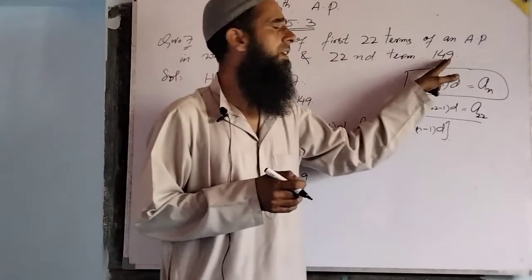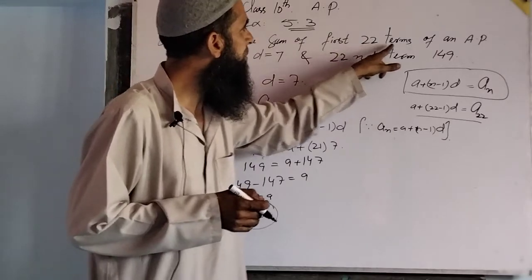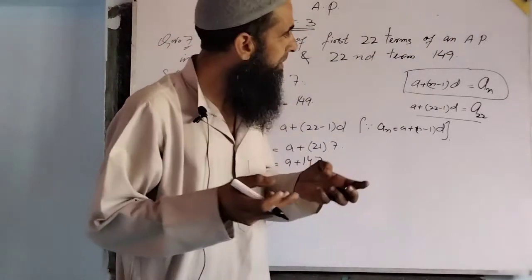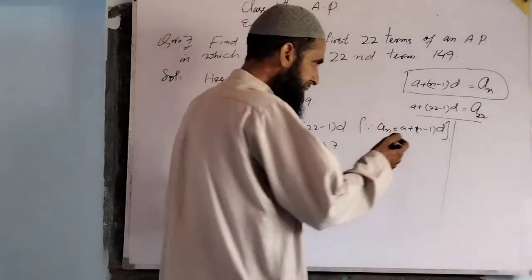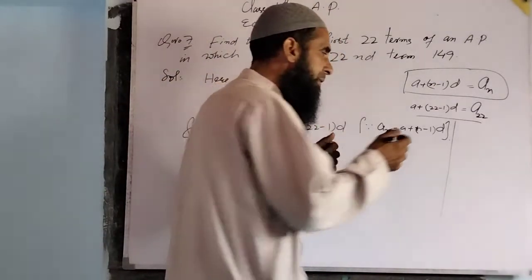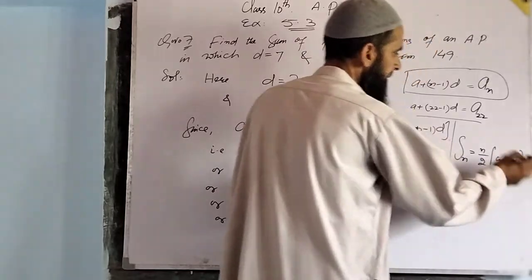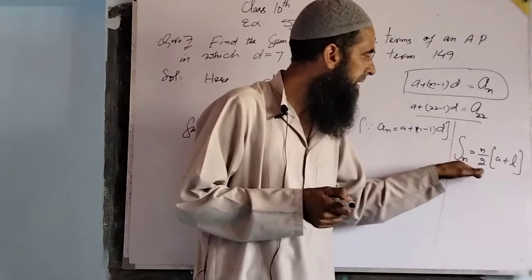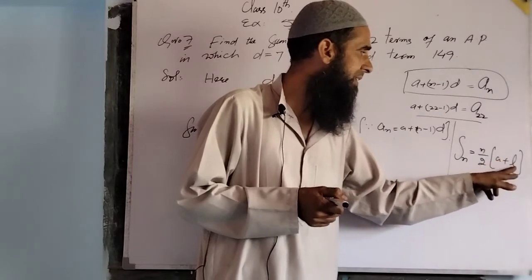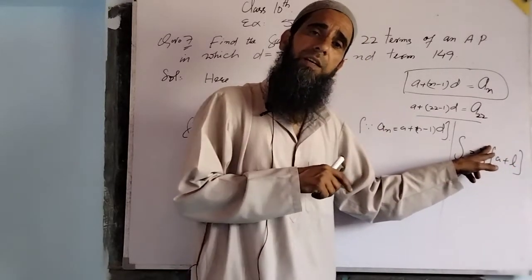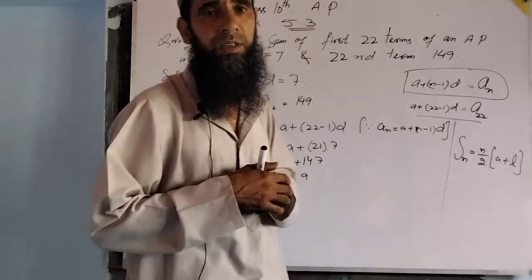Now we have to find the sum of the first 22 terms. Remember from the previous lecture, the formula for the sum of n terms of an arithmetic progression is Sₙ equals n by 2 into (a plus l), where a is the first term and l is the last term of the arithmetic progression.